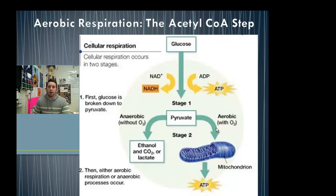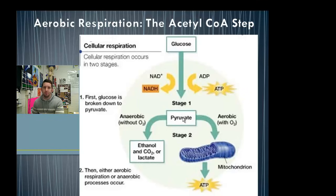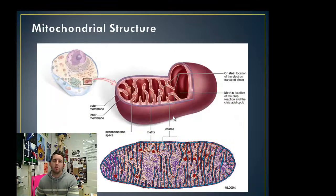We're going to continue breaking down what was originally that glucose — continue breaking down this pyruvate, rearranging carbons, ripping hydrogens off, reducing more coenzymes, creating more ATP, and generally becoming more efficient and creating more energy altogether. We're going to look at what happens if there's oxygen present and if this pyruvate is able to continue on and enter this particular organelle, the mitochondrion.